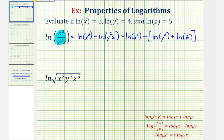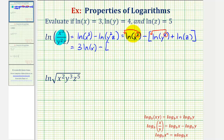For the next step, we're going to apply the power property of logarithms, where we can take the exponent here and here and move it to the front. So now we would have three natural log x minus two natural log y, plus natural log z. Notice in this form, we can now substitute for natural log x, natural log y, and natural log z.